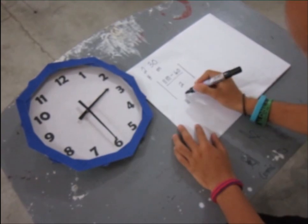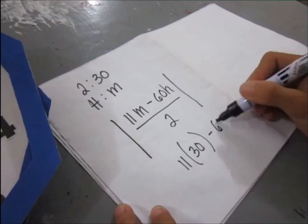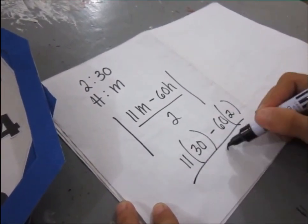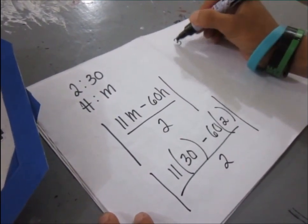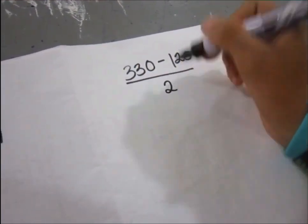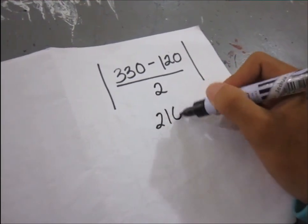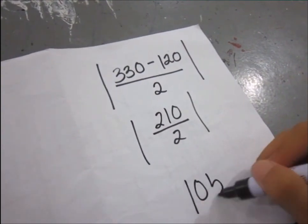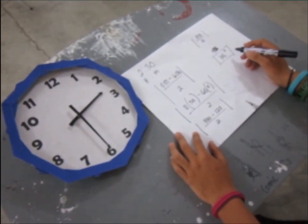11 times 30 minus 60h times 2 all over 2, absolute value. We can get 330 minus 120 all over 2, absolute value, and that is 105 degrees. So, 2:30 has the angle of 105 degrees.